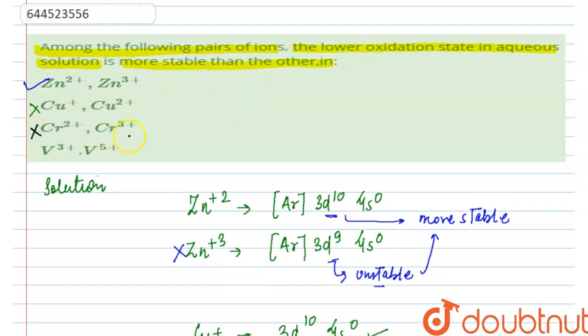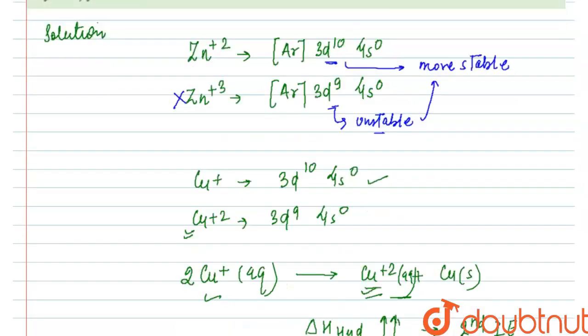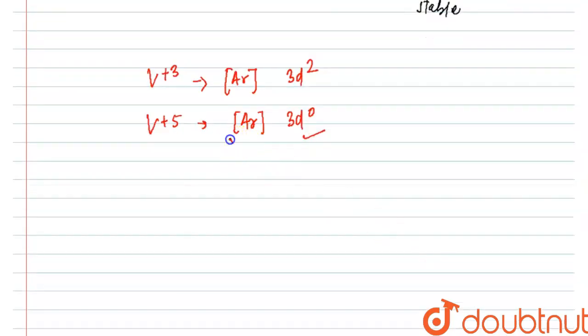Now looking for the last one, we have V+3 and V+5. Now this one will have the electronic configuration - so we have [Ar] 3d2 for V+3, and then we have [Ar] 3d0 for V+5. Now here we can see that there are no electrons left in d subshell in the case of vanadium+5, which means that it has now acquired the noble gas configuration, which is highly stable.